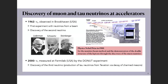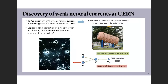Later, in the year 2000, the third type of neutrino — the tau neutrino — was discovered at Fermilab using a special detector called DONUT, which was able to detect the very complicated signature of the tau lepton produced in the interaction of tau neutrinos with nuclear emulsions. The neutrinos were produced via the decay of charm mesons. Accelerator experiments have been at the basis of neutrino physics from the beginning.